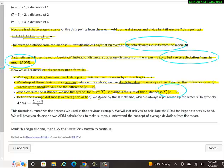To find the average distance, aka the average deviation, we divide by the sample size, which is always represented by the letter n. In symbols, the average distance from the mean is the sum of all the distances of each data value from the mean, absolute value over n, divided by the number of data values. This formula summarizes the process we used in the previous example.